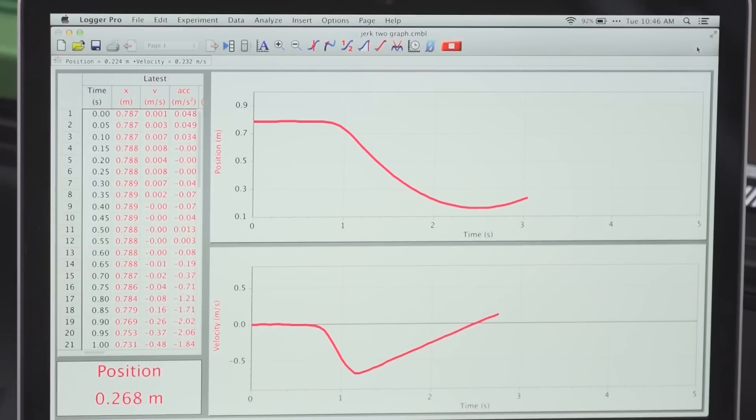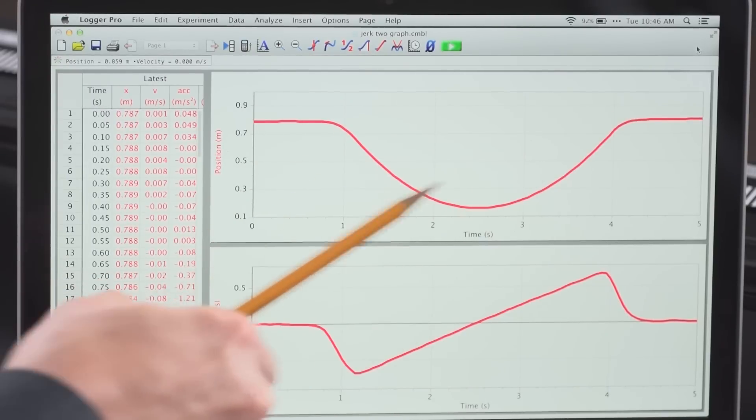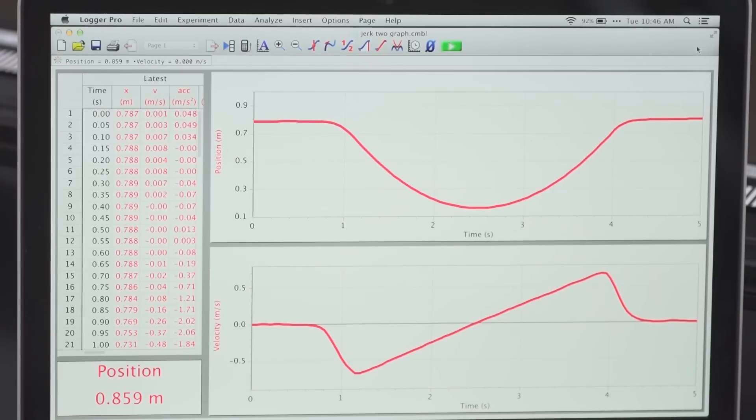Let me start data collection and give the cart a push, and it rolls up and comes back down the track moving with constant acceleration. If I take a look at my position data, I get a very nice clean parabola. There are no spikes. There's no extraneous stuff that you've got to explain away to students.